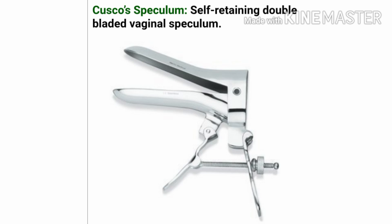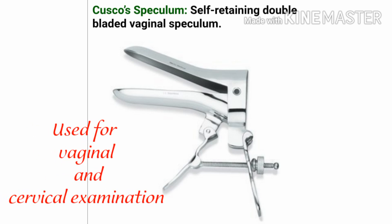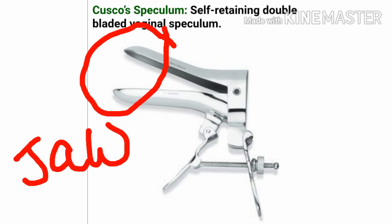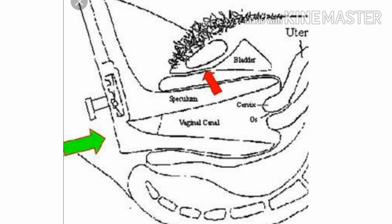This is the Cusco's speculum — a self-retaining, double-bladed vaginal speculum. It is used for vaginal and cervical examination. As you can see, it has jaws that open up like a duck bill. With the help of this figure you can clearly appreciate how the Cusco's speculum looks when it is inserted into the vagina.